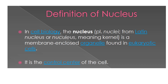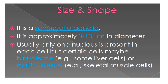The nucleus comes from the Latin word 'nucleus' meaning kernel. It is a membrane-enclosed organelle found in eukaryotic cells — the control center or brain of the cell. In terms of size and shape, it is a spherical organelle with approximately 3 to 10 micrometers in diameter. Usually only one nucleus is present in each cell.